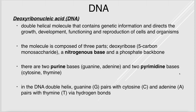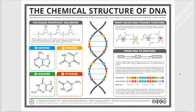A purine always base pairs with a pyrimidine to make the rungs of the ladder. In the double helix, guanine pairs with cytosine and adenine pairs with thymine, connected by hydrogen bonds. This forms the rungs of the twisted ladder, while the sugar-phosphate backbone forms the sides.